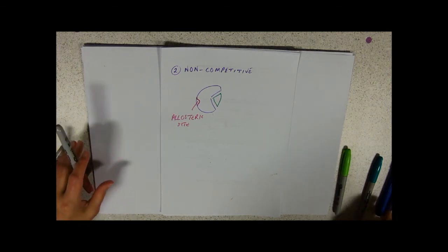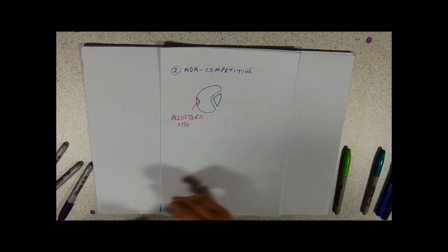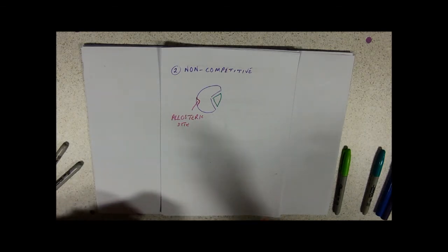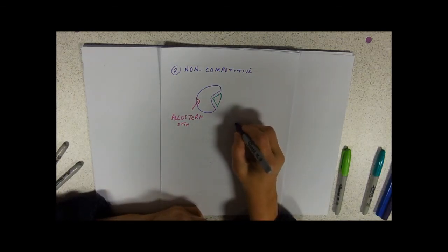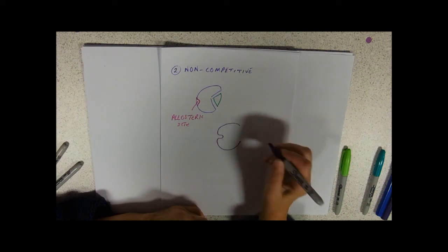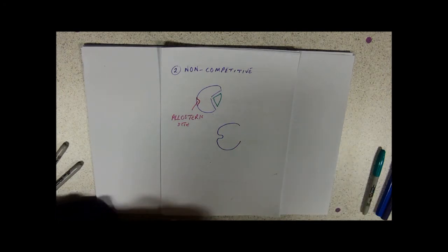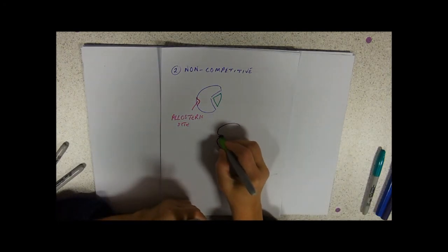Now, the thing about allosteric sites is that when they have inhibitors bound to them, it changes the shape of the protein. So here's our allosteric site. Here's our protein. And what we're saying is that when that inhibitor is sitting in there, it actually messes,